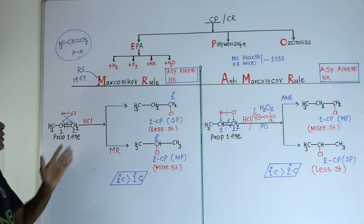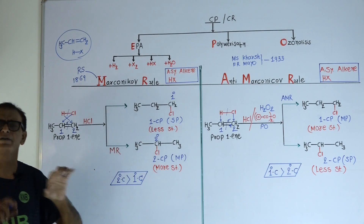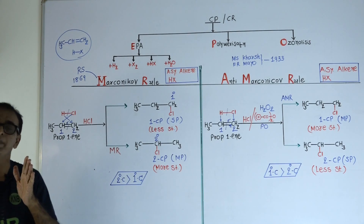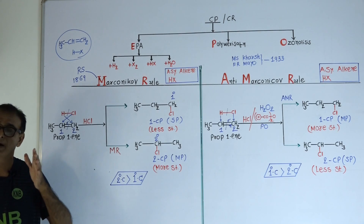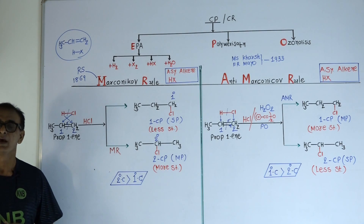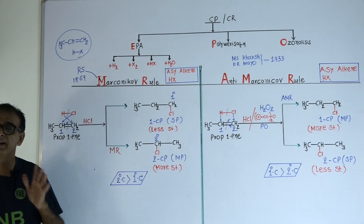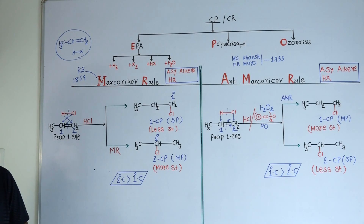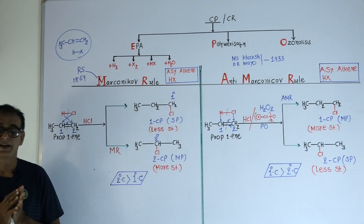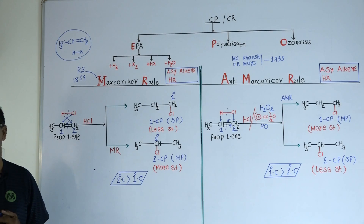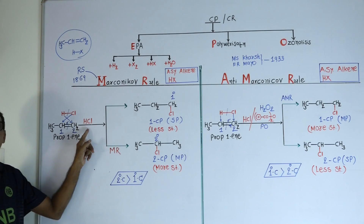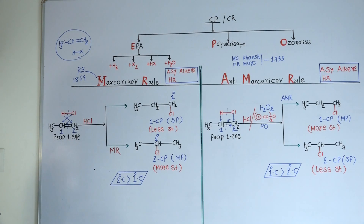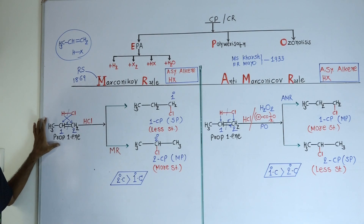Both rules are related to the same type of reaction — the reaction between an asymmetric alkene and an asymmetric reagent. When the substrate is asymmetric and the reagent is also asymmetric, two types of products are possible. For example, when the reaction between prop-1-ene and HCl is carried out — prop-1-ene is an asymmetric alkene and HCl is also an asymmetric reagent.